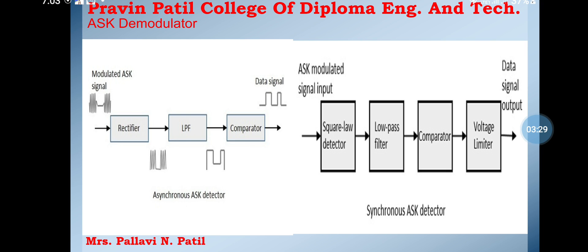The asynchronous ASK demodulator consists of a half-wave rectifier and a low-pass filter. The ASK signal is passed through the half-wave rectifier, which delivers a positive half output. The low-pass filter suppresses higher frequencies and detects the output, and the comparator delivers a digital output.